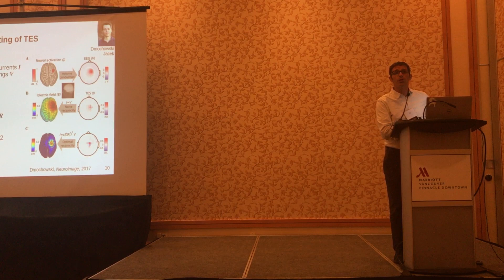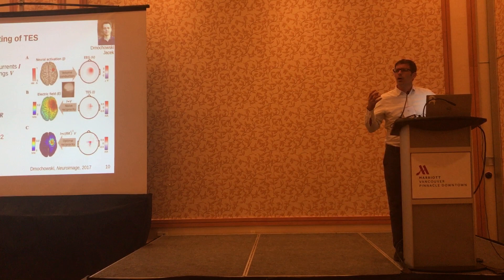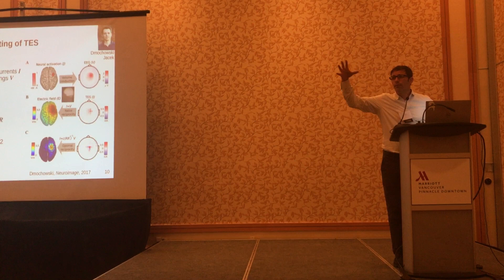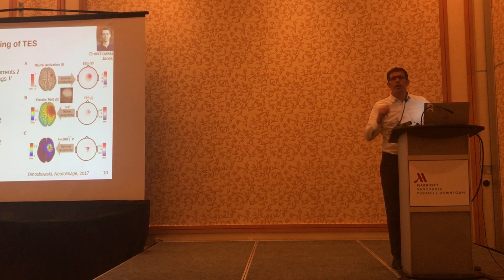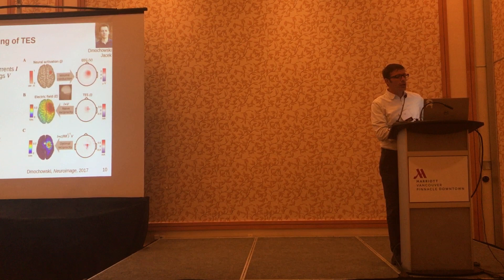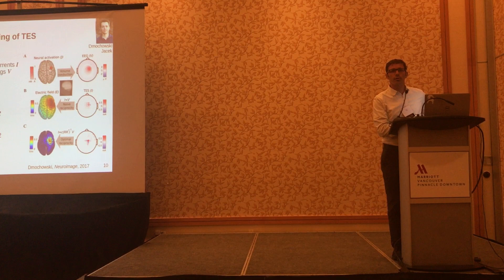The lead field is what source modelers use to understand how current from the brain propagates to the surface of the skull. You take that, essentially invert it, multiply it with the measured voltages, and it gives you the ideal current distribution that will achieve stimulation as close as possible to the original current source distribution. This is something we've just published on — please come talk to Jacek on Monday about this work.